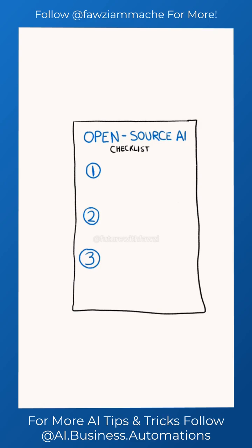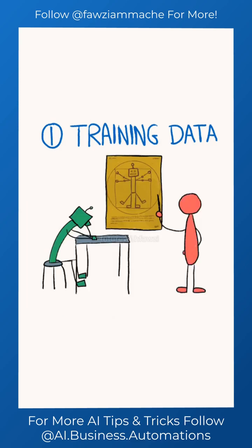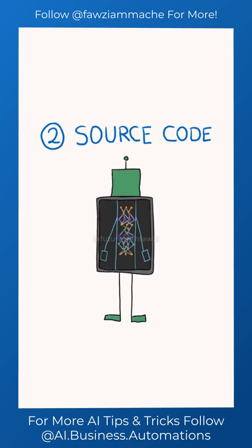To be considered truly open source, a model has to meet three criteria. First, AI developers need to share detailed information about what training data they used and where it came from, so that others can replicate the results.